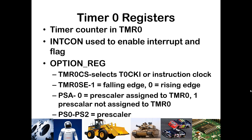The counter is in TMR0. INTCON allows us to enable an interrupt and to track a flag for Timer 0. Effectively, when there are various events that trigger interrupts, we stop executing our current code and go handle them. Within the option register, you can choose your clock source — either T0CKI or the instruction clock — to count periods of the instruction clock or external rising or falling edges.